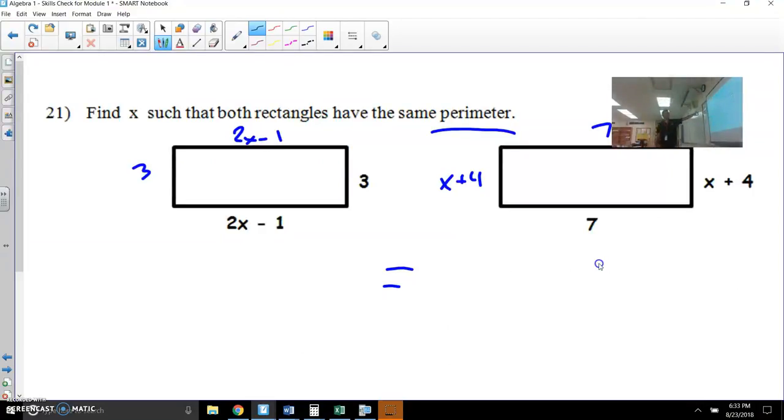For the next one, it says find x such that both rectangles have the same perimeter. So in class, I went ahead and labeled the outside values like a rectangle as the opposite sides are the same. 2x minus 1, 2x minus 1, 3 and 3. Over here, we have x plus 4 and x plus 4, and we also have 7 and 7. So let's see if we were adding this whole perimeter up and adding this whole perimeter up, what would make them equal? So 2x plus 2x is 4x. 3 minus 1 is 2, plus 3 is 5, minus another one is 4.